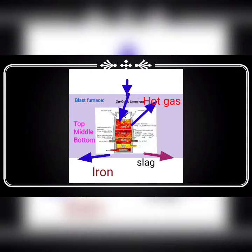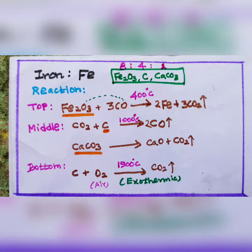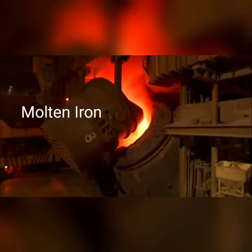Next, at the bottom side, carbon react with oxygen at 1500 degrees Celsius, carbon dioxide is removed, it is an exothermic reaction. At the bottom, we get molten Fe and slag.